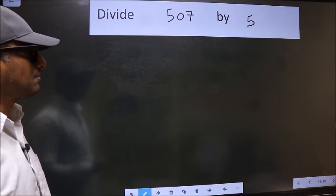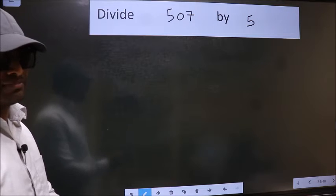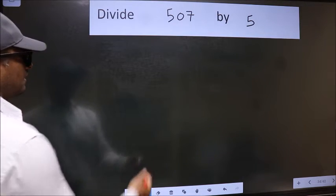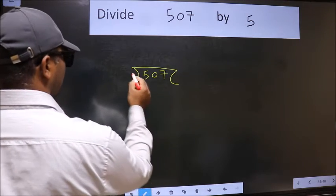Divide 507 by 5. To do this division, we should frame it in this way: 507 here and 5 here.